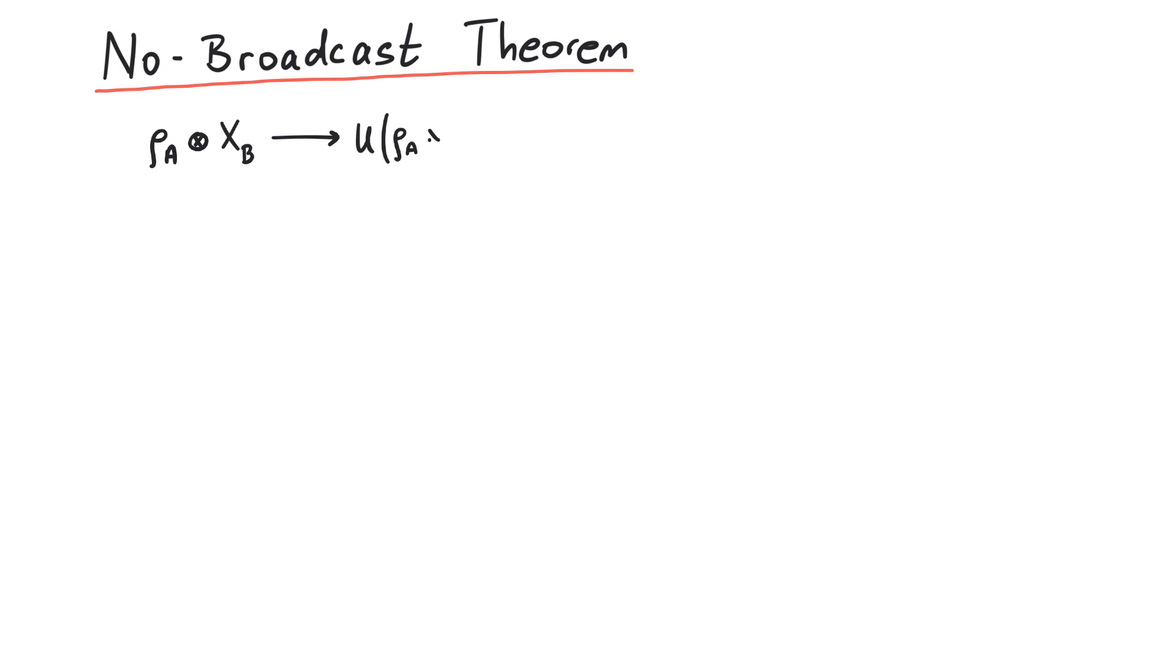We apply a unitary transformation u on this combined state and call the result rho tilde. This rho tilde describes the state in both systems, whereas rho before described only one of the substates. The no-broadcast theorem states that it is impossible to find such a rho tilde that the partial trace over system A yields rho again, and that at the same time the partial trace over subsystem B also yields rho.